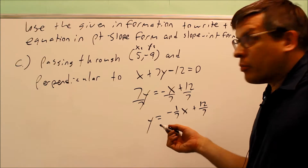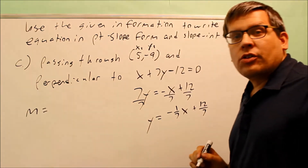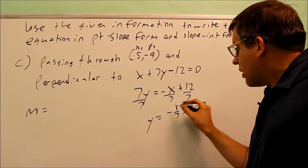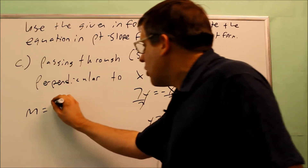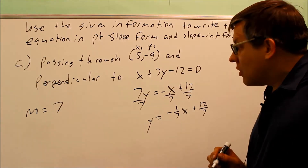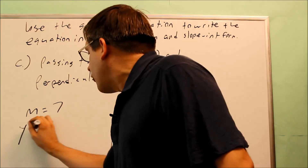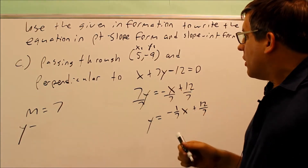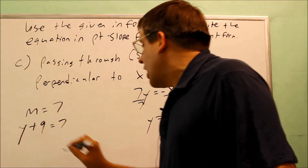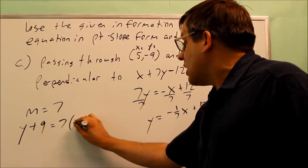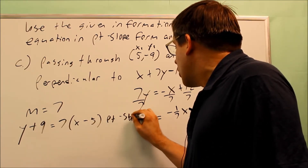The new line through point (5, negative 9) must be perpendicular to this one. The perpendicular slope has the opposite sign — so positive instead of negative — and the fraction is flipped, giving a slope of 7. Using the point-slope formula: y minus y1, where y1 is negative 9, so y plus 9 equals 7 times x minus x1, and x1 is 5. This is the point-slope formula.